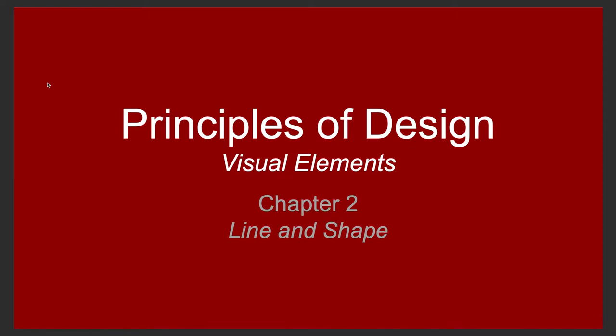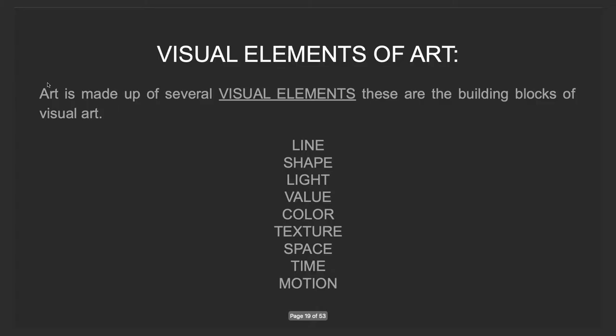This is another definition-heavy chapter. Visual elements of art — art is made up of several visual elements. These are the building blocks of visual art: line, shape, light, value, color, texture, space, time, and motion.